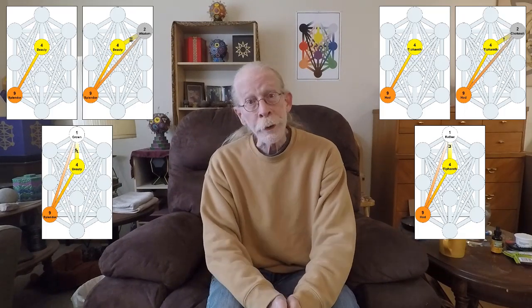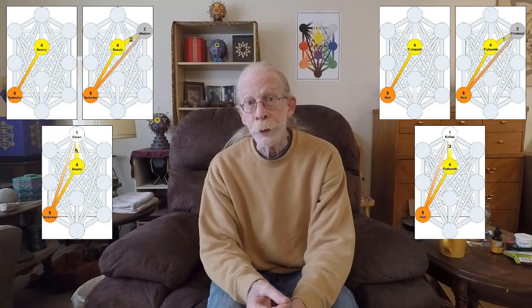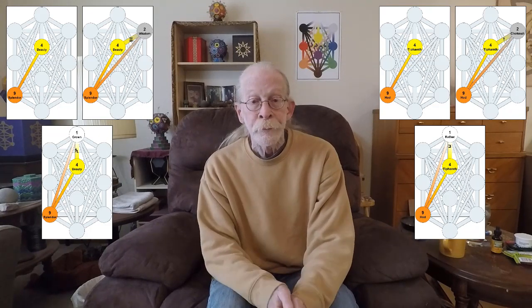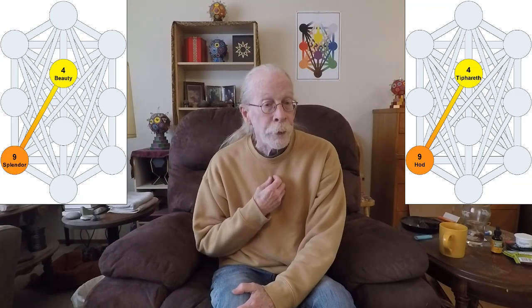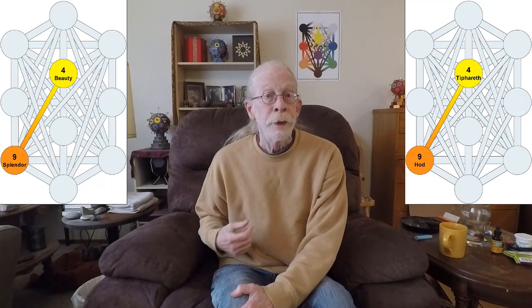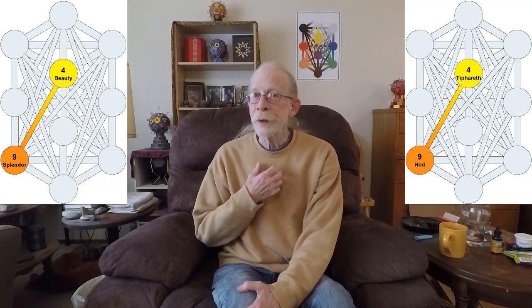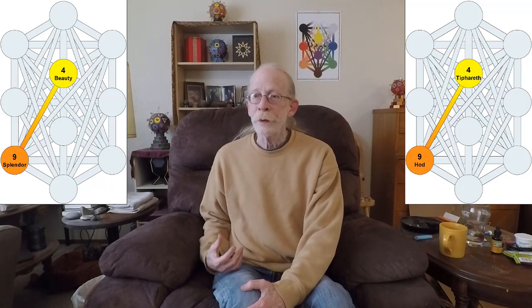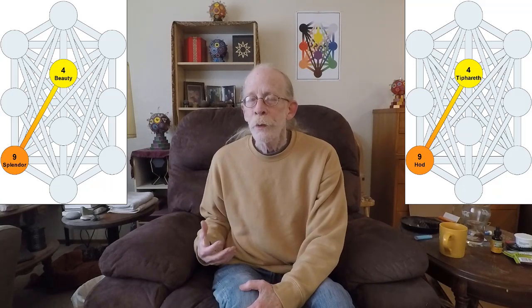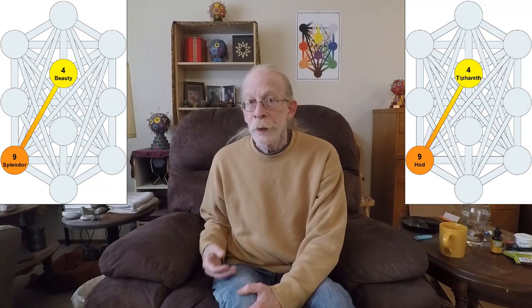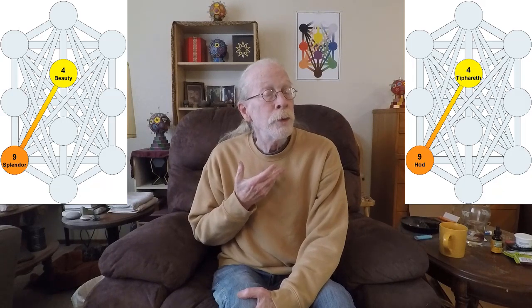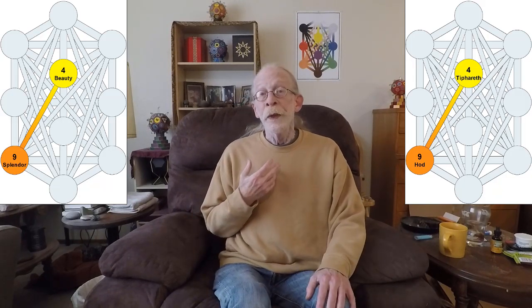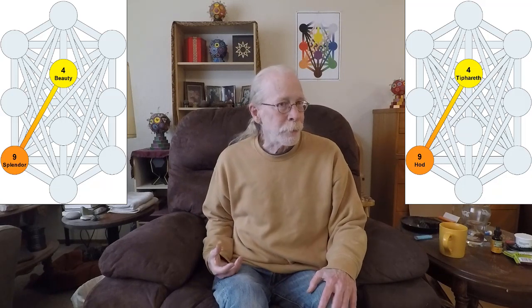Today we have three more gates of HOD: one linear gate and two triangular gates. Our linear gate today is the connection between the hidden path between Tiferet and HOD. This is a connection between the rational intellect and the higher intellect, between the fire and air regions of the temporal mental body and the water region of the temporal mental body.